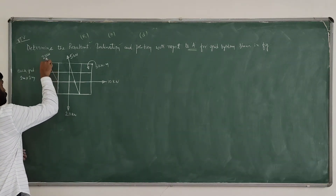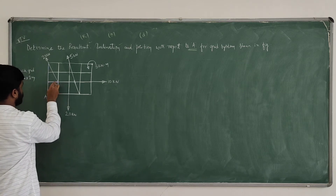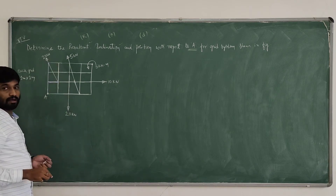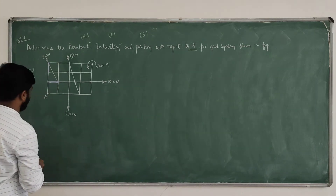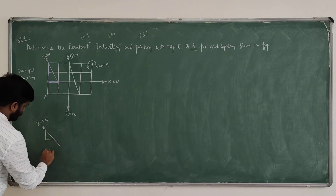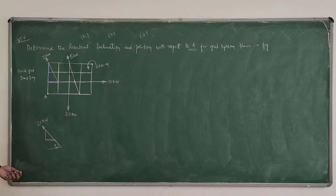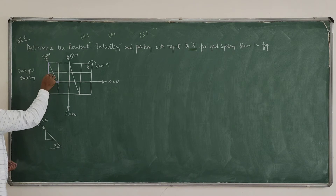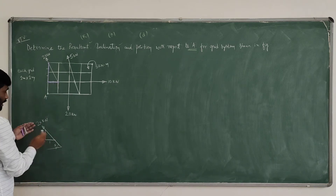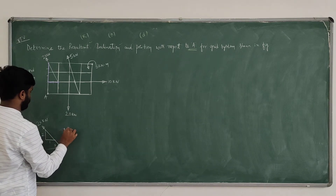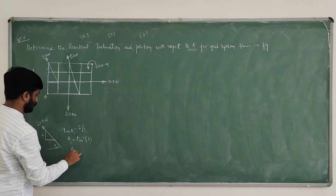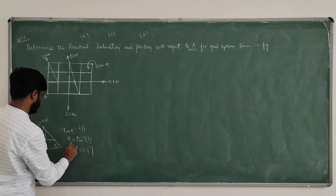For the first force — the 20 kilo Newton force — identify the slope. From the starting point to the end point, identify the slope as horizontal and vertical components. Vertically, there are 2 grids, so 2 meters; horizontally, only 1 grid, so 1 meter. Apply tan theta: opposite by adjacent gives tan θ1 = 2/1, so θ1 = tan⁻¹(2) = 63.43 degrees.